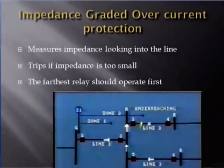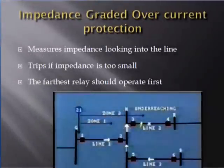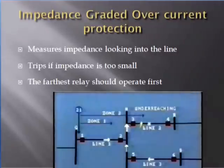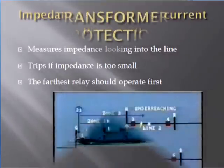The third scheme is the impedance-graded scheme. This system incorporates impedance-sensitive circuit breakers. These circuit breakers measure impedance looking into the line and trip if the impedance is too small. The farthest relay is the most sensitive. They also trip if a slight negative impedance is seen, for back-current protection.